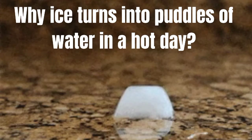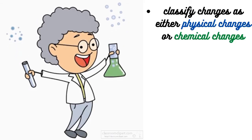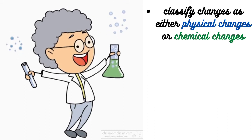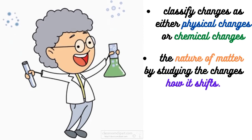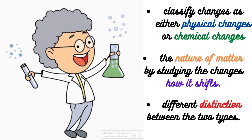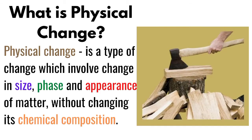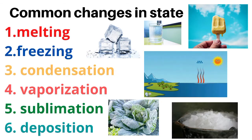Why does ice turn into puddles of water on a hot day? Scientists, especially chemists, classify changes as either physical or chemical changes. A physical change involves a change in size, shape, and appearance of matter without changing its chemical composition. Solids, liquids, and gases can be changed from one state to another, and there are six common changes in state.